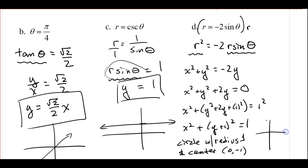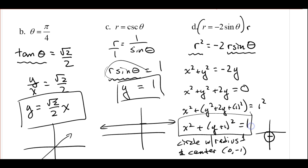So this is a circle with radius 1 and center (0, −1). Let's make a quick sketch: center at (0, −1), radius 1 — a small circle right there. There's our equation and our graph.